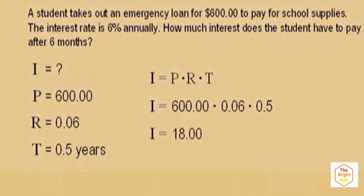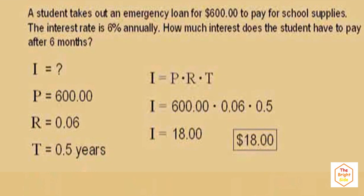The product is $18. After 6 months, the student has to pay $18 in interest, so $618 total to pay off that loan — because the student has to pay $18 of interest. That's what we just calculated.